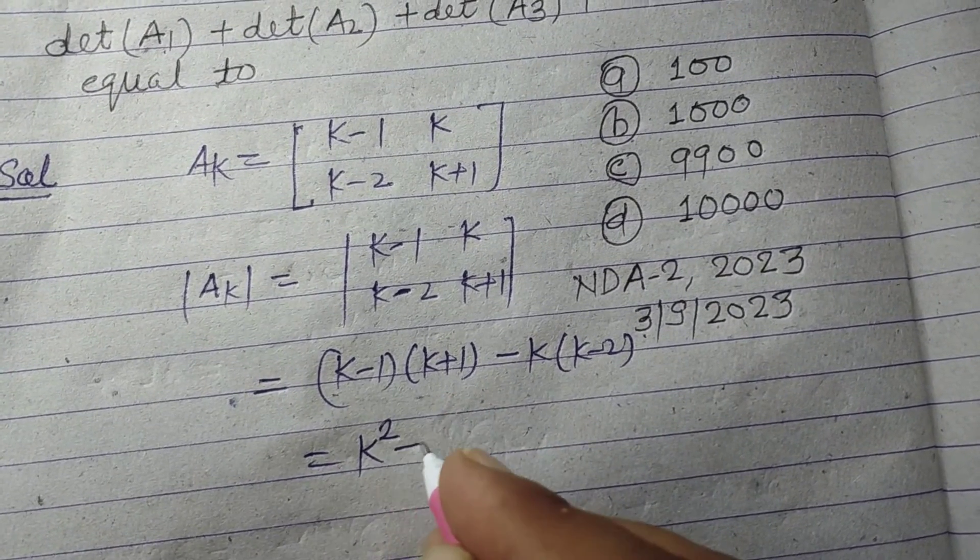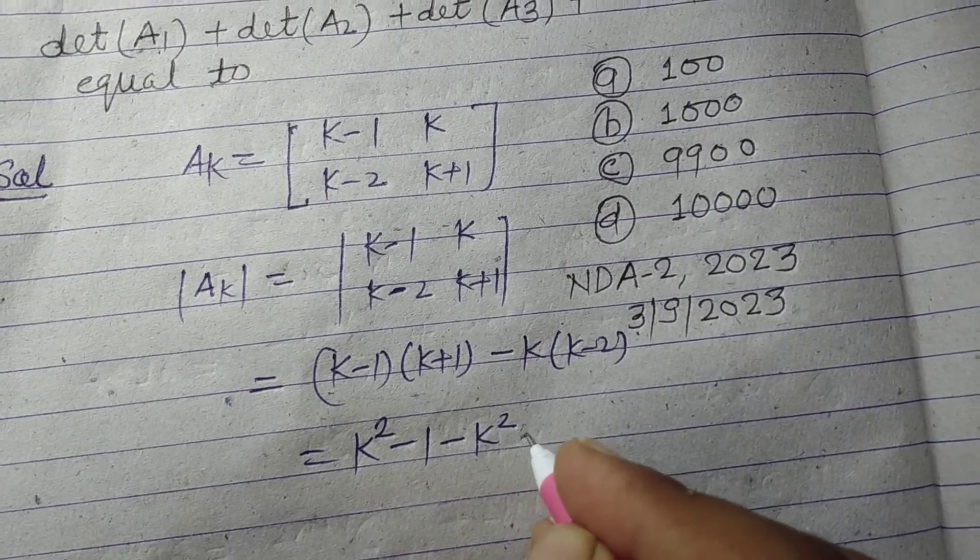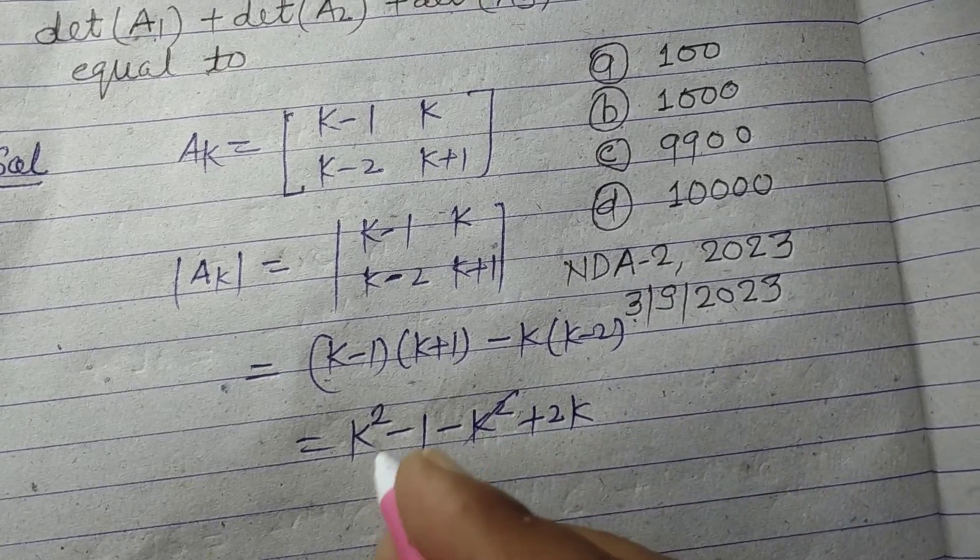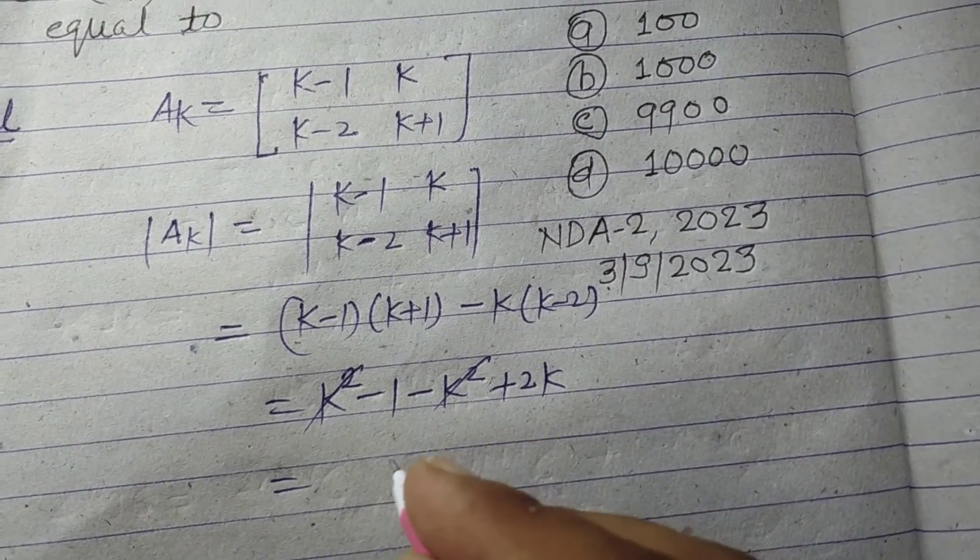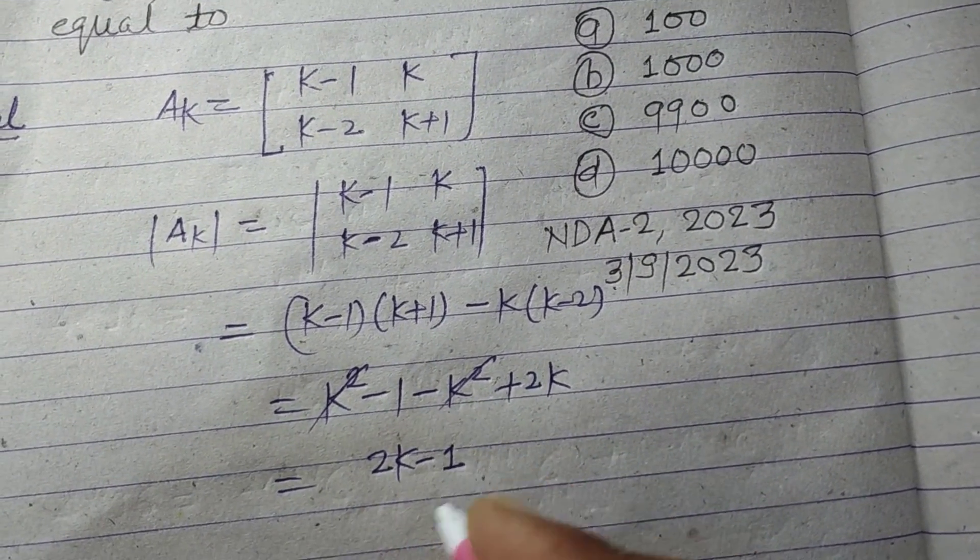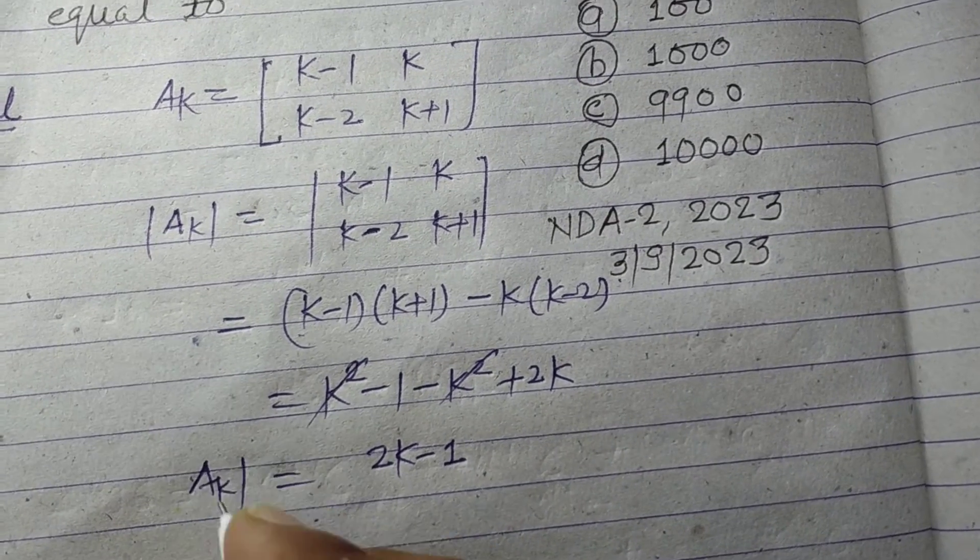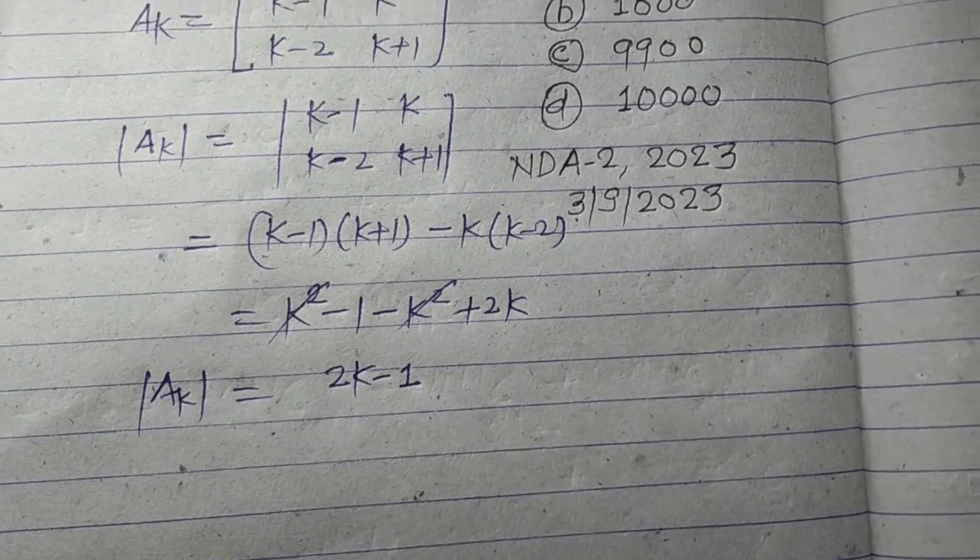K² and k² cancel, leaving 2k - 1. So the determinant is 2k - 1.